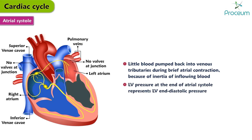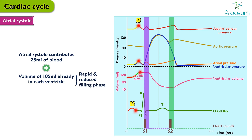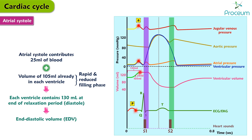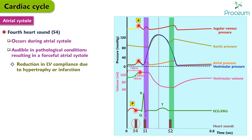The left ventricular pressure at the end of atrial systole represents the left ventricular end-diastolic pressure. Atrial systole contributes a final 25 mL of blood to the total volume of about 105 mL already in each ventricle during rapid and reduced filling phases. Thus, each ventricle contains about 130 mL at the end of its relaxation period, which is called the end-diastolic volume. The fourth heart sound occurs during atrial systole but is typically audible only in pathological conditions resulting in a forceful atrial systole, such as a reduction in left ventricular compliance due to hypertrophy or infarction.